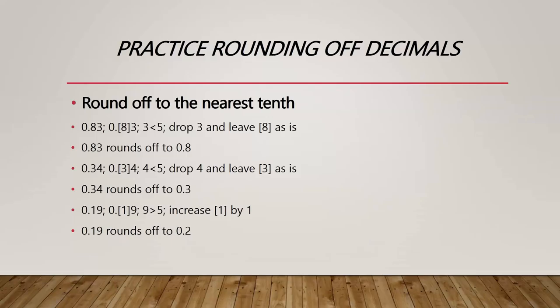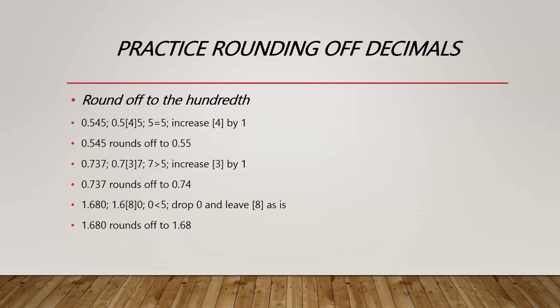For 0.545 — counting two decimal places, we put the bracket on the 4 and we have a 5, which means the bracket number increases by 1. So 0.545 rounds to 0.55. For 0.737 — brackets on the 3, and 7 is greater than 5, so we increase the bracket number by 1. 0.737 rounds off to 0.74.